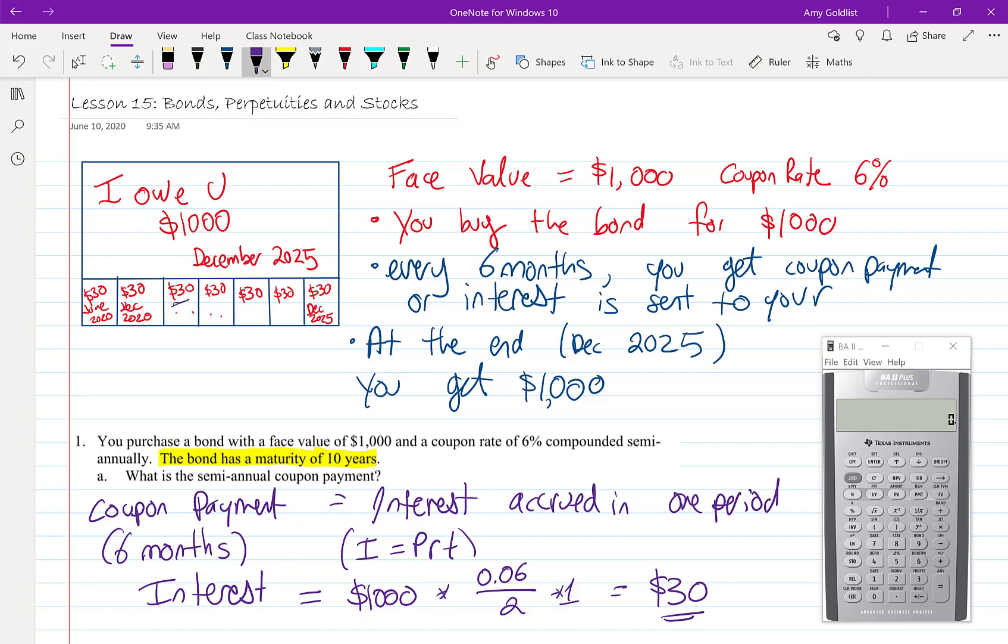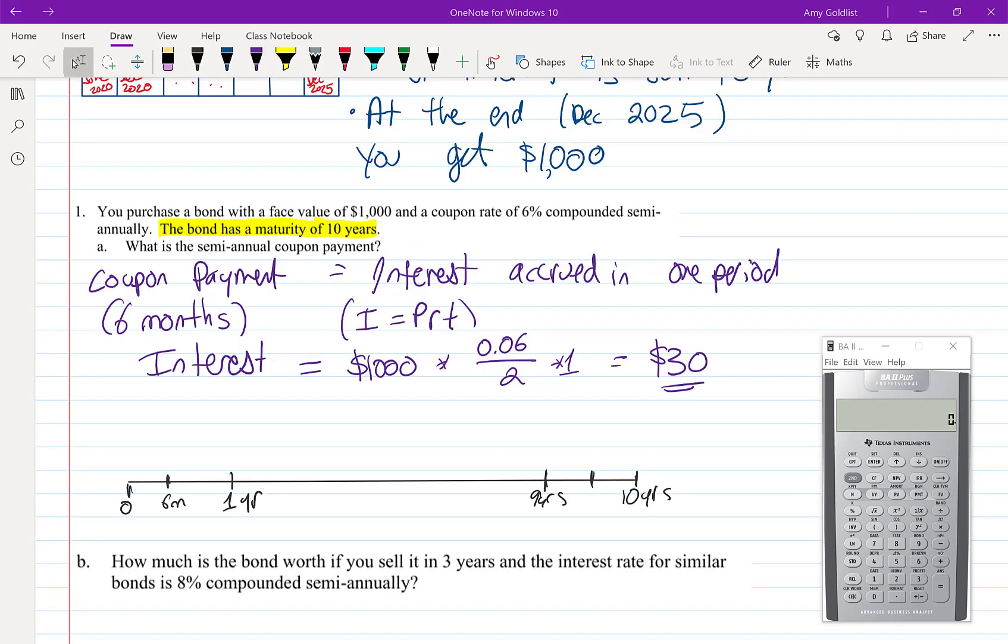Let's look at this bond in a timeline. This goes on for ten years, and every six months we get a payment. So I'm going to put in a payment of $30 every six months. At the very end we still get $30, but we also get $1,000. This is in fact an ordinary annuity. How much did we pay for this originally? We paid $1,000, the face value.